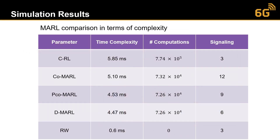Comparing computation complexity, time complexity, and signaling overhead: the centralized model has low signaling but is very complex in time complexity and number of computations. The cooperative model has slightly more signaling overhead but lower time complexity. The decentralized model has the least signaling overhead and lowest time complexity and fewest computations, but has worse performance compared to the other schemes.